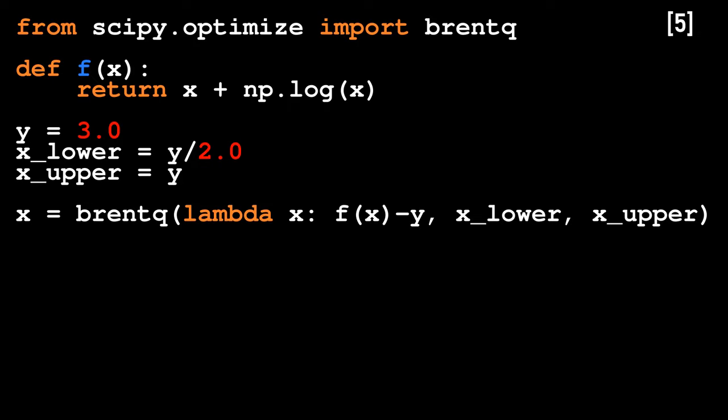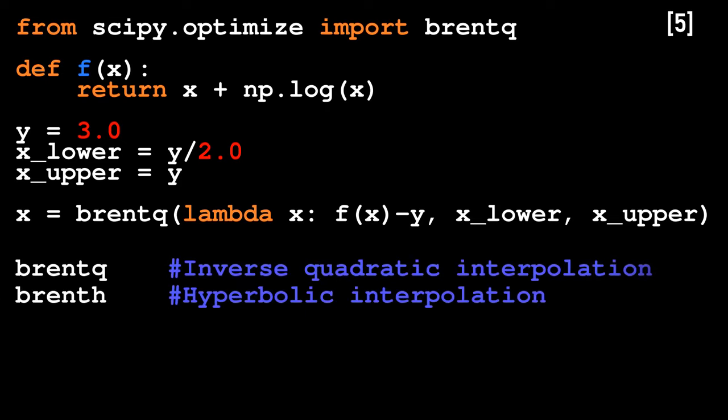You can, of course, just use brentq to find the roots of a function without this lambda business if you so wish. There is also the brenth function, which replaces the quadratic interpolation step with hyperbolic interpolation instead, but I'm old school so I only use the quadratic one. In a more performant language like C++, you can pass g as a function pointer to a ready-made solver or integrate the function evaluation into the solver directly if this helps performance somehow.